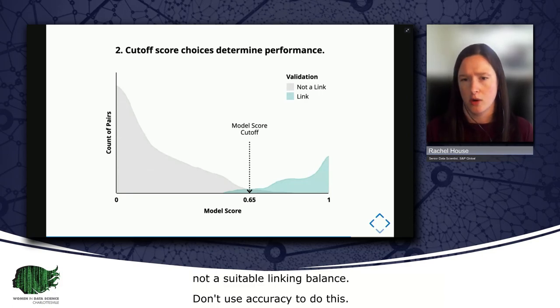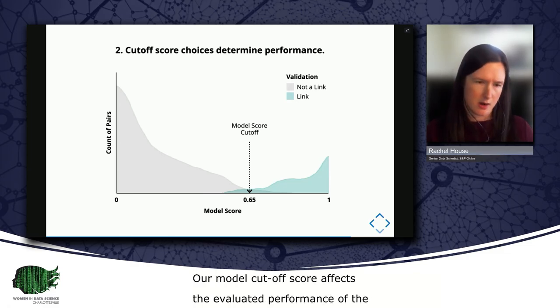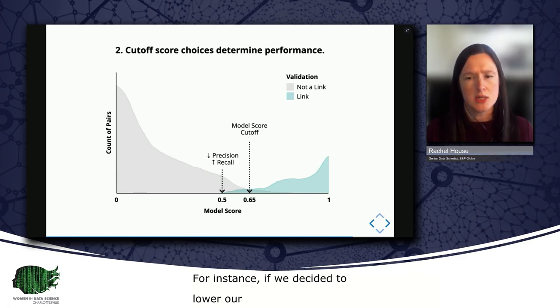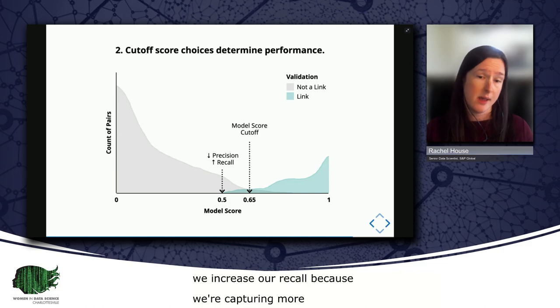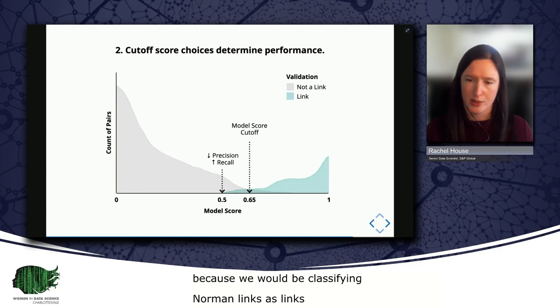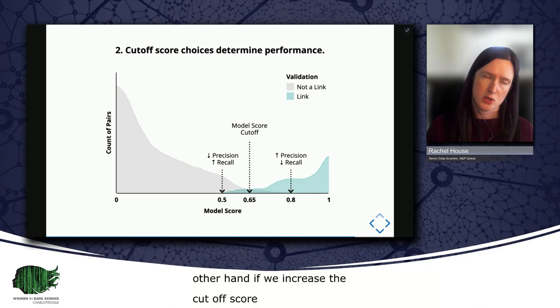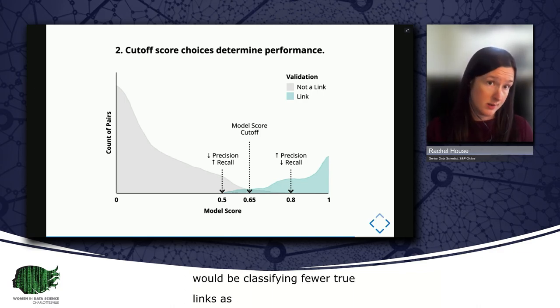Our model cutoff score affects the evaluated performance of the model. For instance, if we decided to lower our existing cutoff in the example here from 0.65 to 0.5, we'd increase our recall because we're capturing more true links, but we decrease our precision because we would be classifying more non-links as links. And on the other hand, if we increase the cutoff score from 0.65 to 0.8, we decrease our recall because we'd be classifying fewer true links as links, but we increase our precision because we'd be classifying fewer non-links as links.